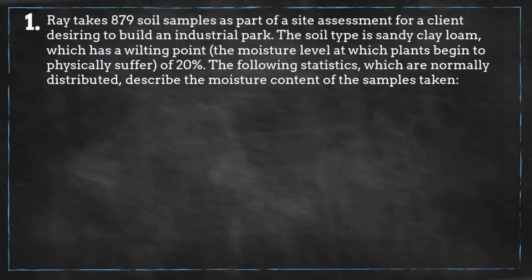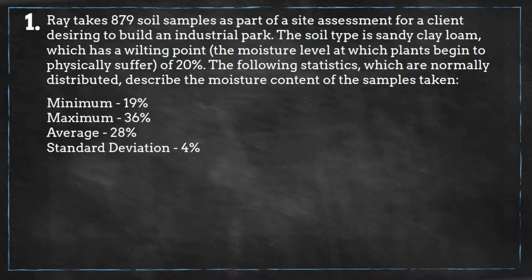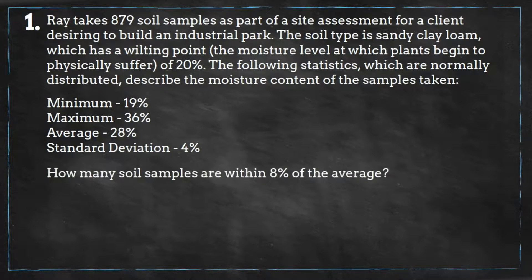Ray takes 879 soil samples as part of a site assessment for a client desiring to build an industrial park. The soil type is sandy clay loam, which has a wilting point of 20%. The following statistics, which are normally distributed, describe the moisture content of the samples taken. How many soil samples are within eight percent of the average?